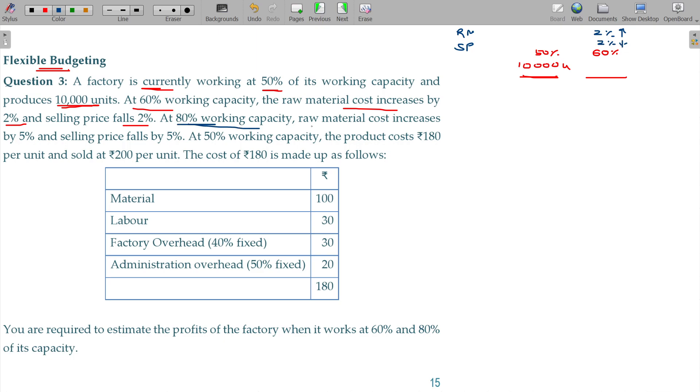At 80% capacity, the raw material cost increases by 5% and selling price falls by 5%.